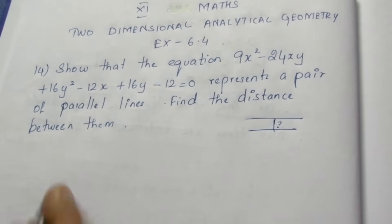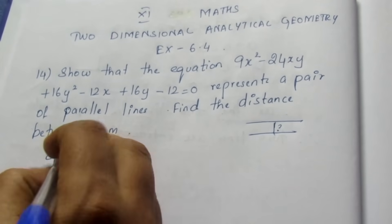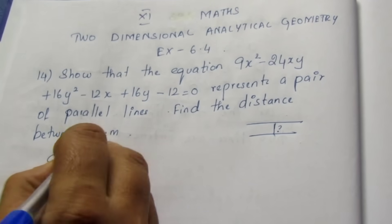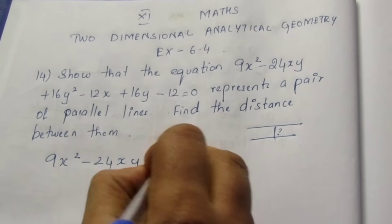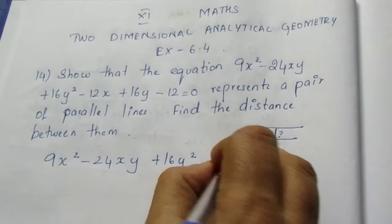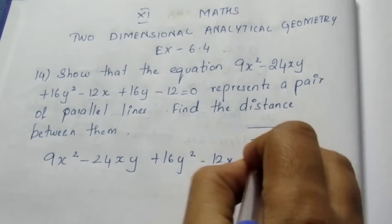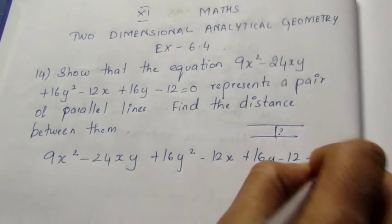First, we will prove that the given equation is the combination of two equations. The equation is 9x² - 24xy + 16y² - 12x + 16y - 12 = 0.